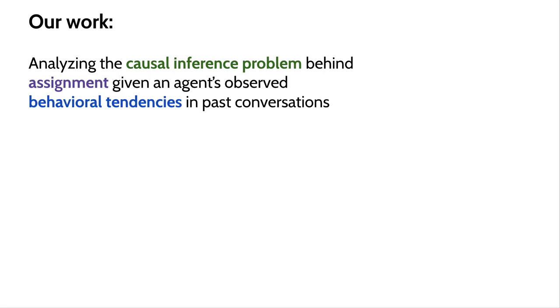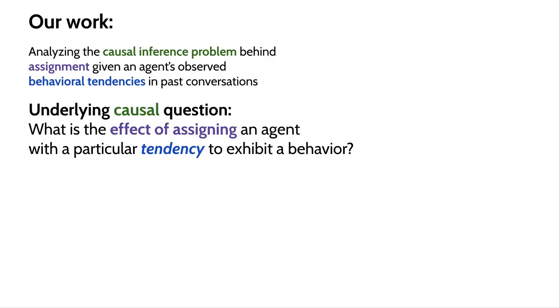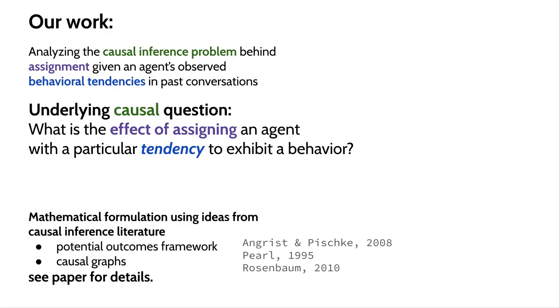And the underlying causal question here is, what's the effect of assigning an agent with a particular tendency to future conversations? Now to precisely articulate what this question entails, we draw on the causal inference literature. And here I'll provide a high-level description of the technical ideas in the paper.